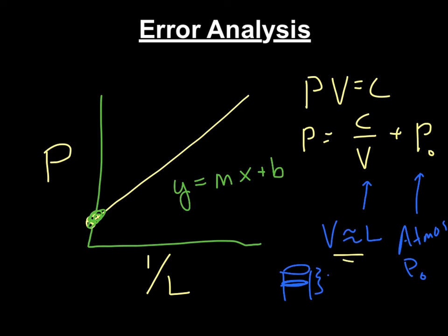Again, let's double check if you go Y. No, pressure on the Y. M is going to be this constant right here. X is 1 over L. Put that right here, 1 over L. And then B is what you're looking for. That is your barometric pressure. Because that's the offset. So what you're going to do, compare your thermal expansion coefficient with accepted values.